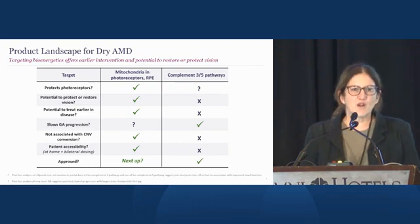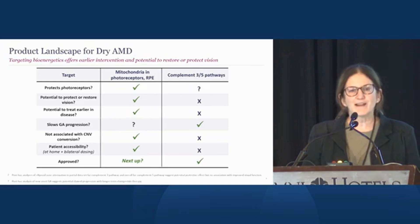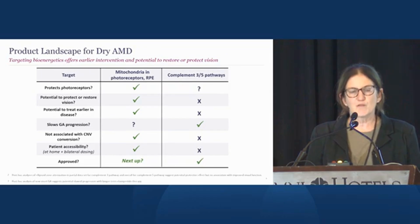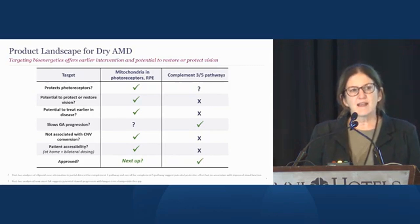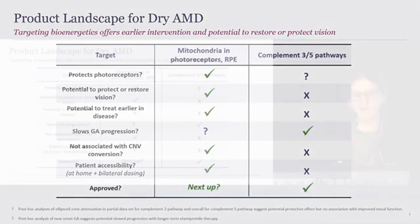Where do we fit in the overall picture? With complement inhibition, we finally have options for patients. Coming at this from a different angle to restore bioenergetics may give us the opportunity to actually improve vision — or at least preserve it. And with our mode of administration and bilateral targeting, we hope to provide a more convenient option for patients for at-home self-administration of therapy.